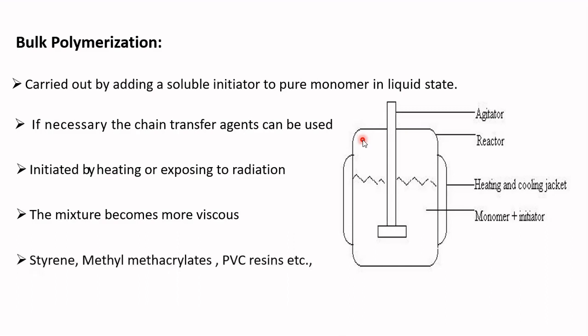This process can be used for free radical polymerization and some step growth polymerization. Examples include: polystyrene from styrene, poly(methyl methacrylate) from methyl methacrylate, and PVC resins from vinyl chloride — all prepared using the bulk polymerization technique.